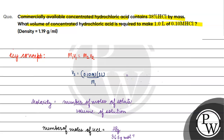Coming back to the question, we have M1V1 = M2V2, so V1 = (0.10 molar × 1 liter) / 12.389 molar. Molar cancels from molar. V1 = 0.10 / 12.389 = 0.00807 liters. Writing in milliliters: 8.07 milliliters. I hope you understood it well. Thank you and all the best.